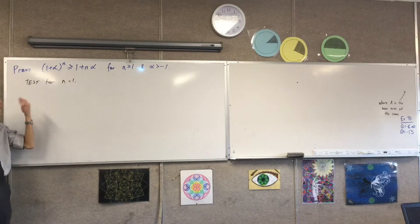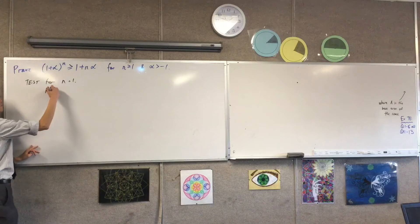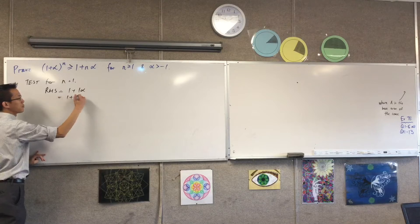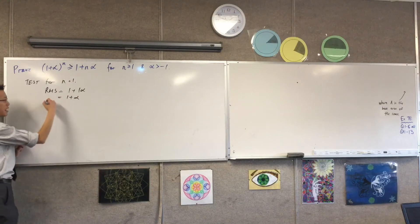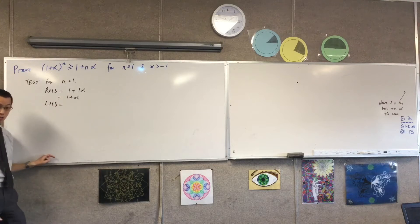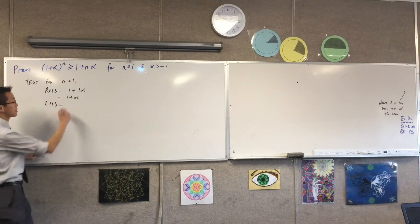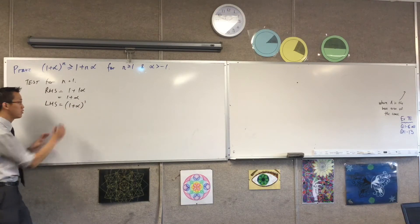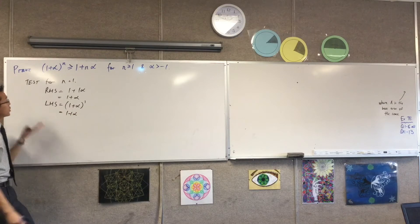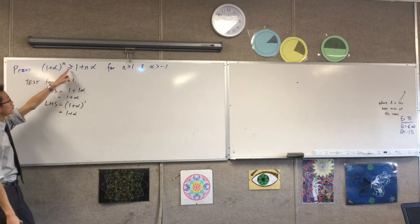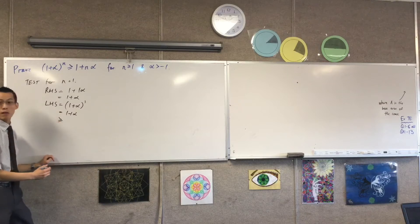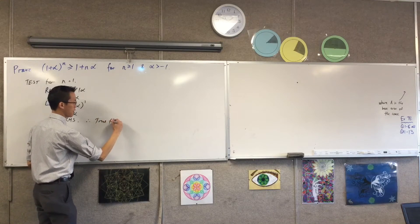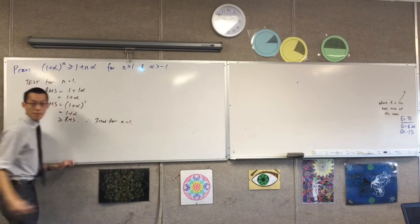As is my custom for an inequality, I'm going to start with the right hand side. The right hand side is 1 plus 1 alpha, groundbreaking. Then I look at my left hand side. I'm literally going to write 1 plus alpha to the power of 1, I'm showing that I can do the substitution, that's 1 plus alpha, which is sure enough greater than or equal to my right hand side which I worked out before. So I'm going to write right hand side, therefore. I've done my base case, happy times.